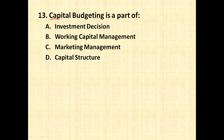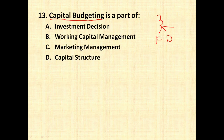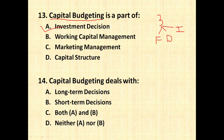The next question is: capital budgeting is a part of which type of decision? There are three types of decisions in financial management: financing decision, which covers all financing-related activities; dividend decision, which covers dividend-related aspects; and investment decision, which covers investment-related aspects. Capital budgeting is a type of long-term investment, so it is part of the investment decision.